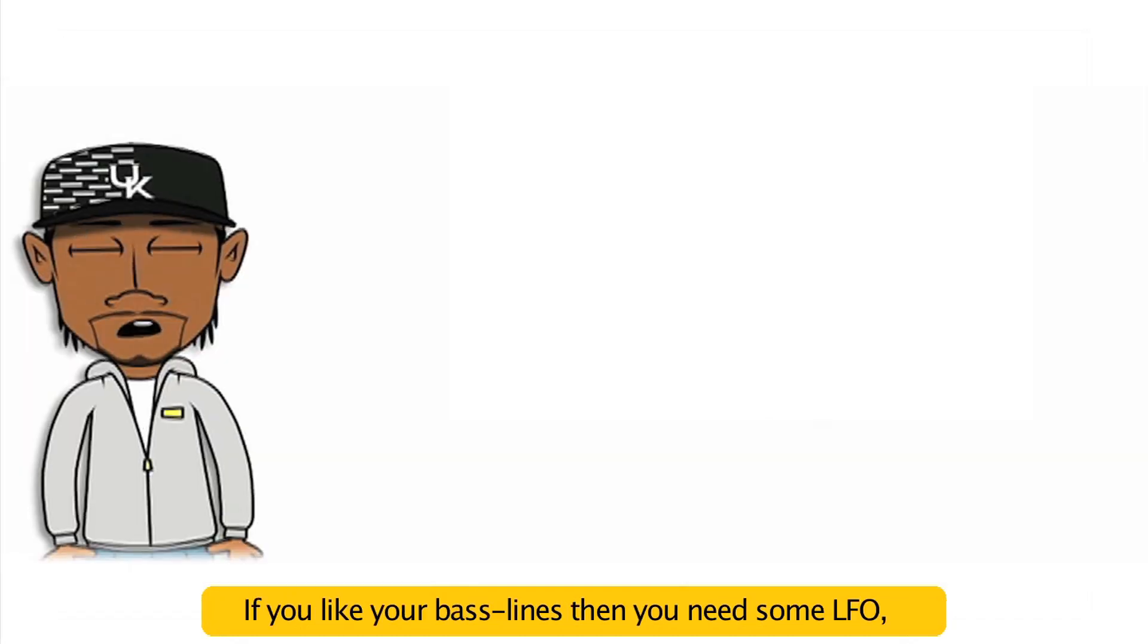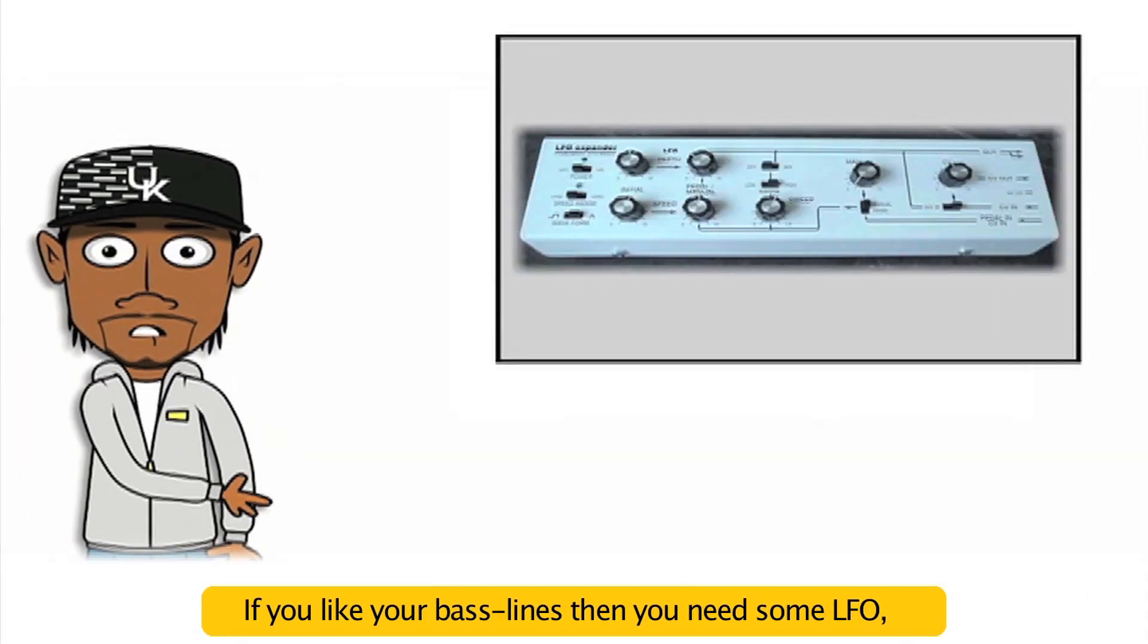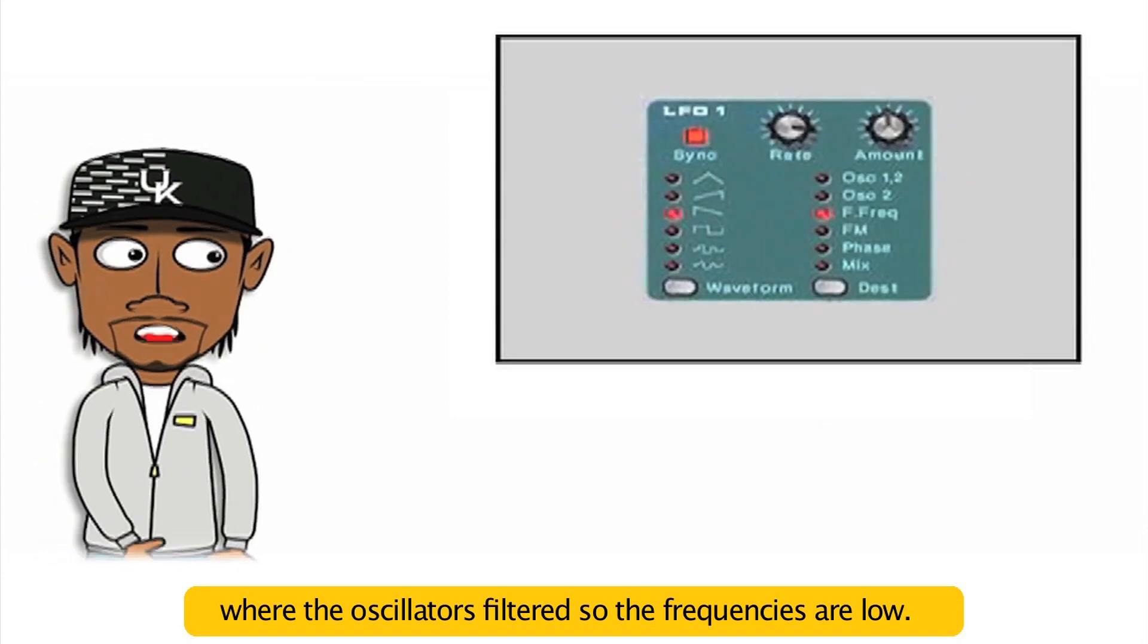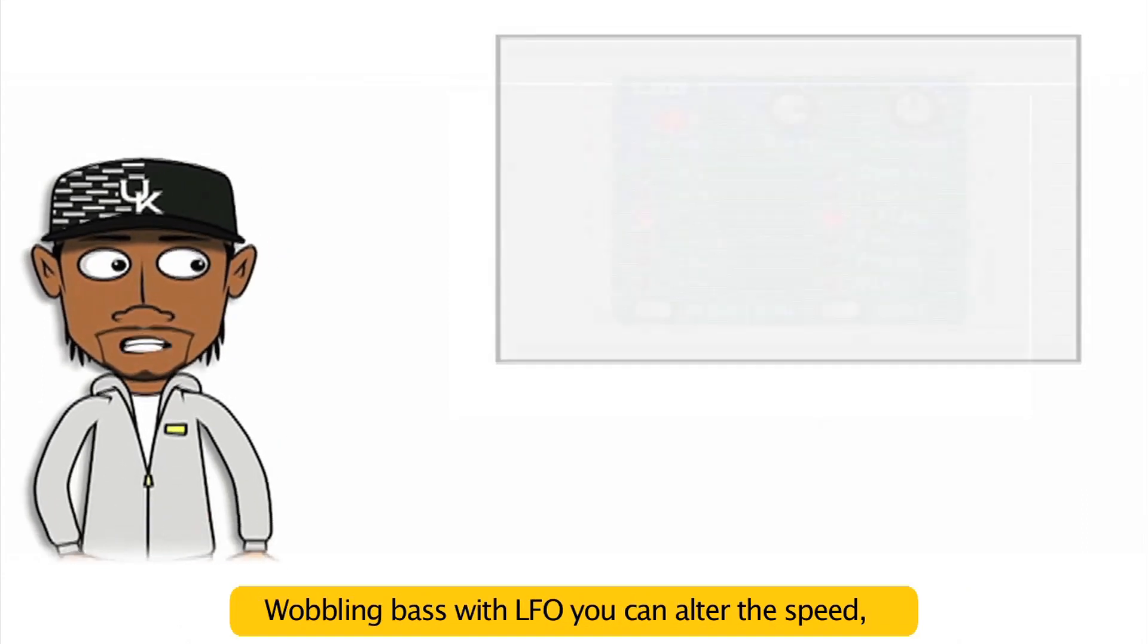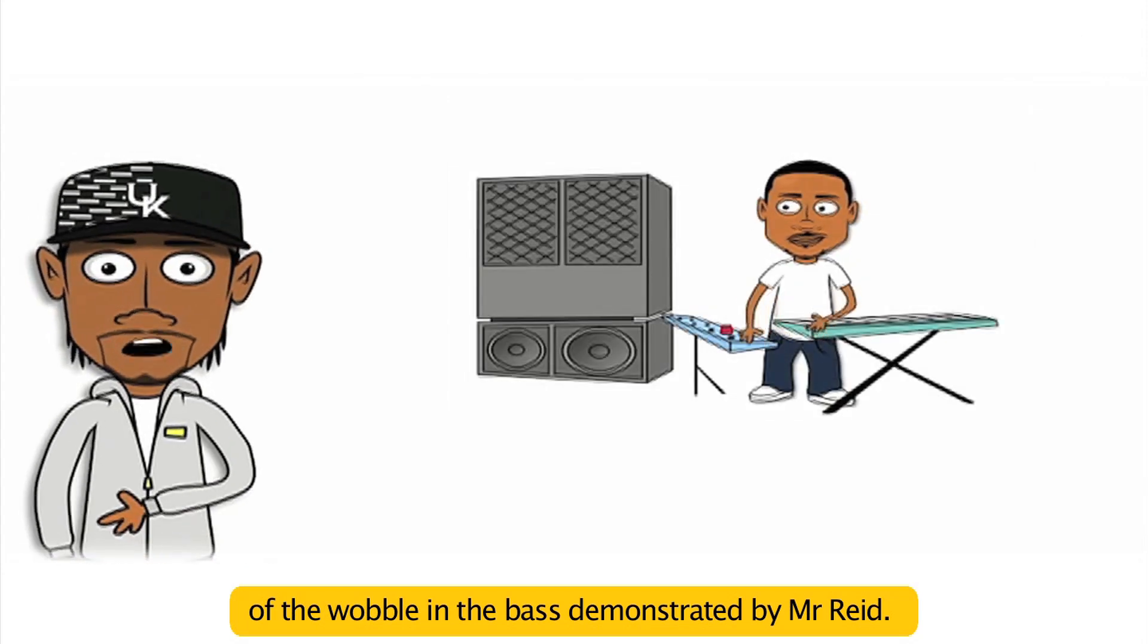Low pass and high pass are two of the filter types that can modify the tone until it's sounding right. If you like your baselines, then you need some LFO, where the oscillator is filtered so the frequencies are low. Wobble that bass with LFO, you can alter the speed of the wobble in the bass, demonstrated by Mr. Reid.